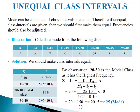We have to calculate mode from data where X is 0 to 4, 4 to 10, 10 to 15, 15 to 20, 20 to 30, and so on, with corresponding frequencies given. The class intervals are not equal. To make them equal, we take common class intervals of size 10: 0 to 10, 10 to 20, 20 to 30, and 30 to 40. For 0 to 10, we add the frequencies of 0 to 4 and 4 to 10: 2 plus 7 equals 9.